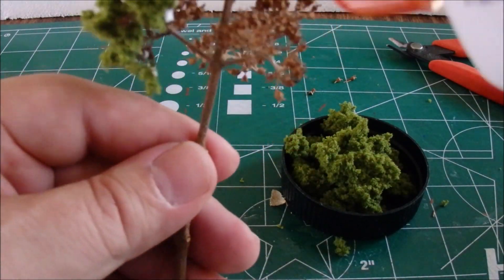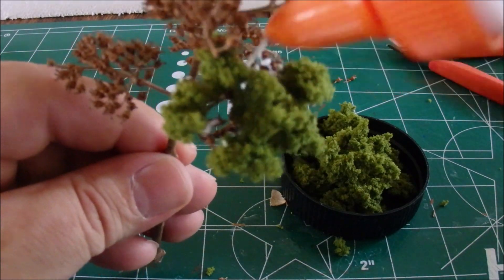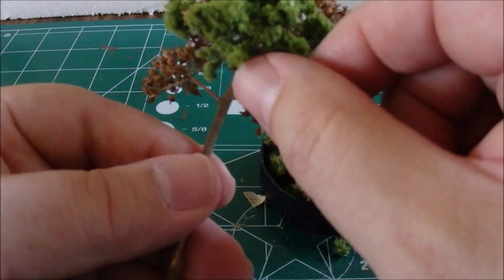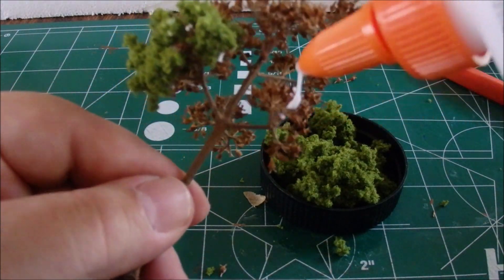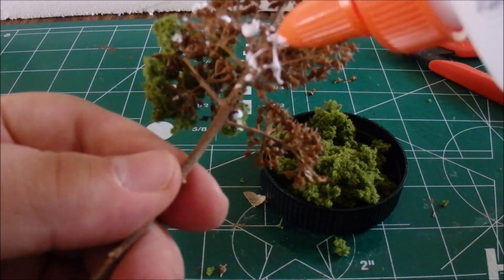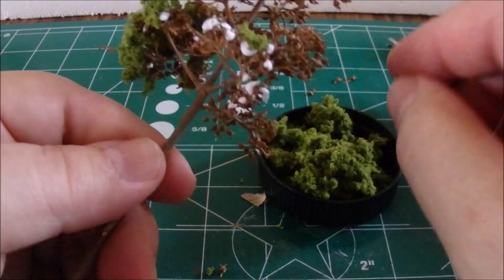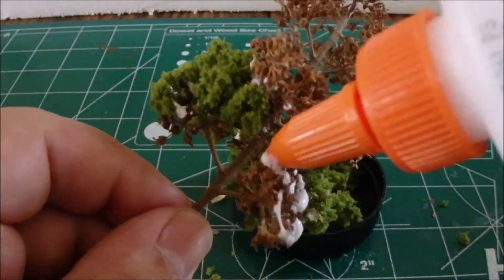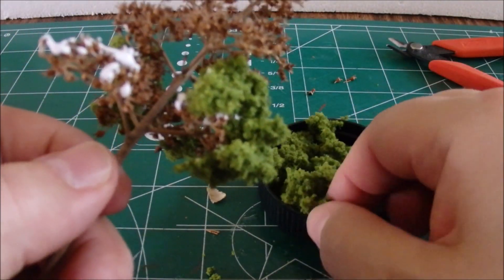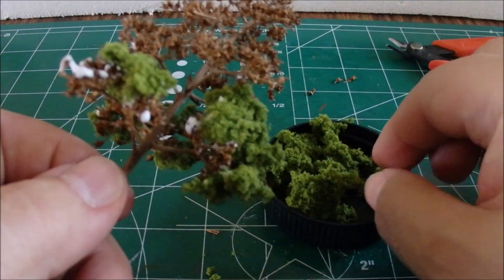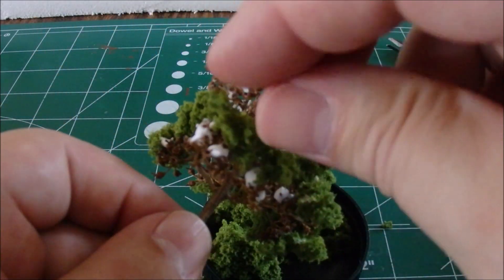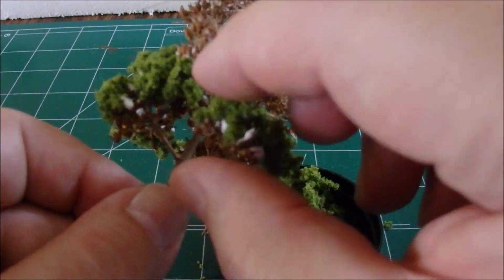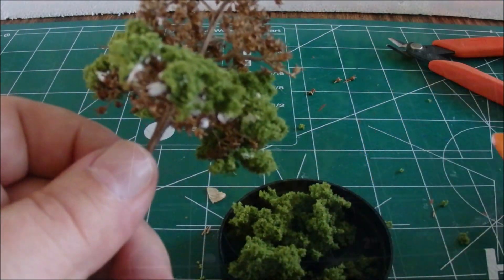One advantage to this method over spray adhesive is that sometimes spray adhesives can get a little hard to control and you wind up getting the adhesive on the trunk, and as a result you get some of the foliage stuck to the trunk. This way it gives you a little more control and keeps the foliage from getting stuck where you don't want it. It takes a little more time, not quite as quick as just spraying adhesive and dunking it into some ground foam for coverage, but you get a little more control. I like the way it looks at the end, you don't have any foliage on the main branches or the trunk.